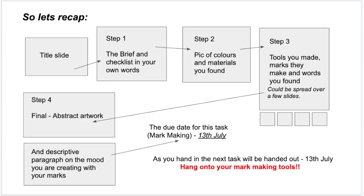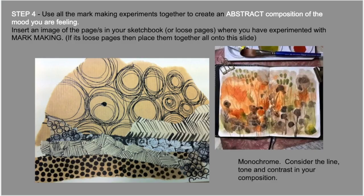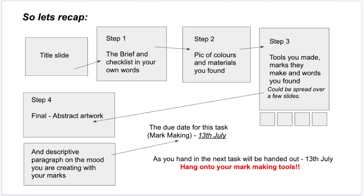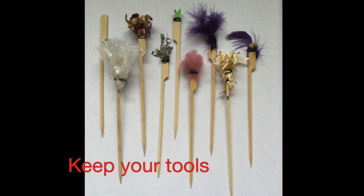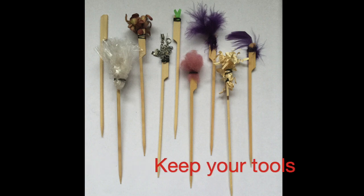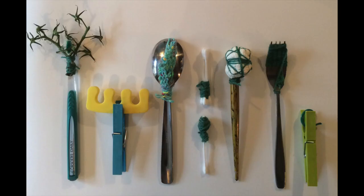Step four is the abstract artwork with your mark making, and remember somewhere either before or after that page, you're going to explain the mood you're trying to create. The deadline for this task is the 13th of July, and on that date we'll be handing out your next task. So hang on to your tools!